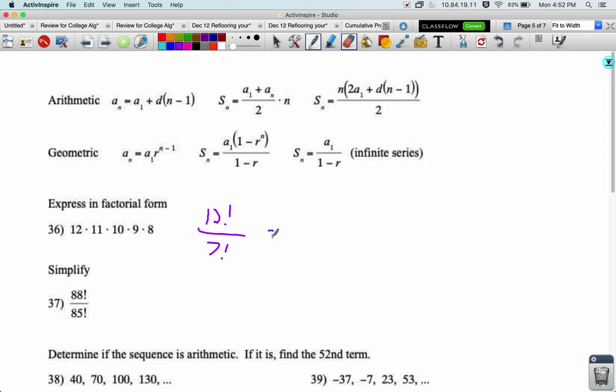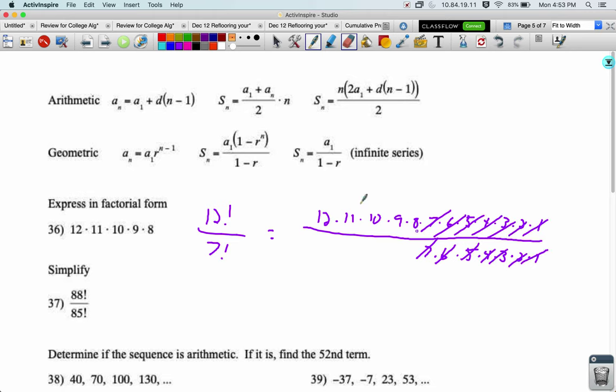Now this is 12 times 11 times 10 times 9 times 8 times 7 times 6 times 5 times 4 times 3 times 2 times 1, that's 12 factorial. 7 factorial takes over at the 7 and it's going to make sure all of these numbers here cancel out, leaving us with the numbers multiplied that we want.